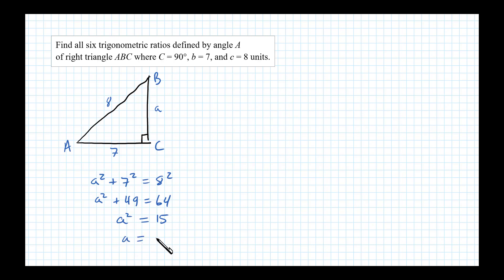Taking the square root, we get plus or minus the square root of 15, and we'll choose the positive square root since this is a geometry problem. So the length of side a is the square root of 15 units.